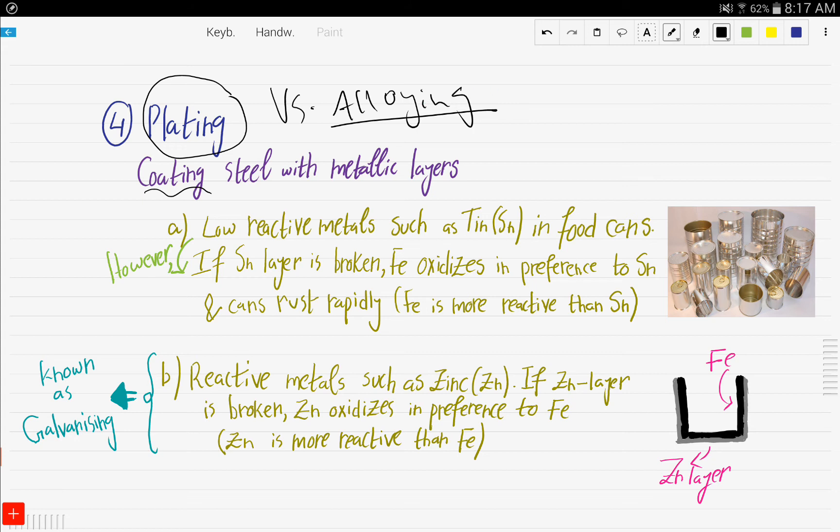Let's start with the first example. Low reactive metals such as tin are used in food cans. Here is a food can: from the inside, it is coated with tin, and from the outside is steel. However, the drawback of tin is similar to that of paint. If it gets scratched or broken, the iron will oxidize in preference to the tin and will rust rapidly.